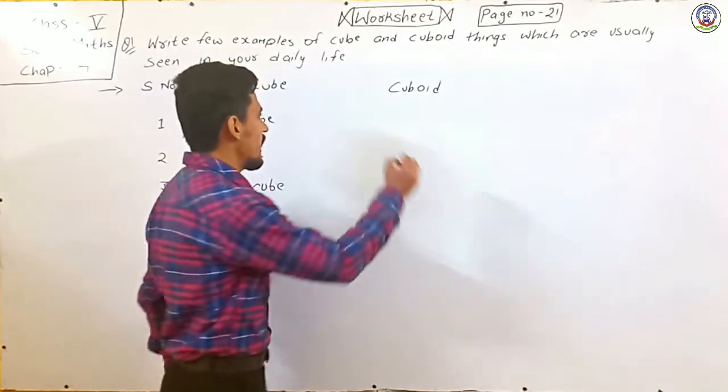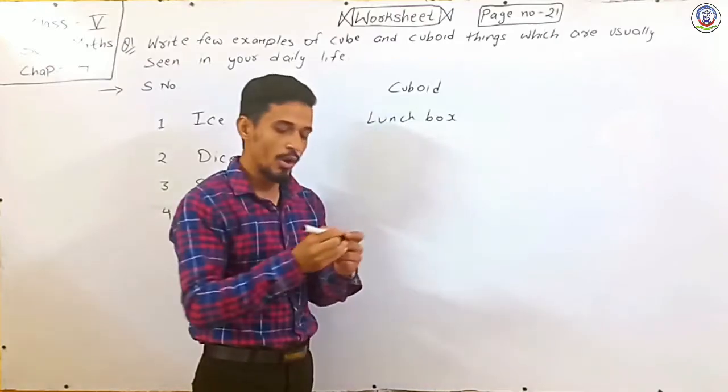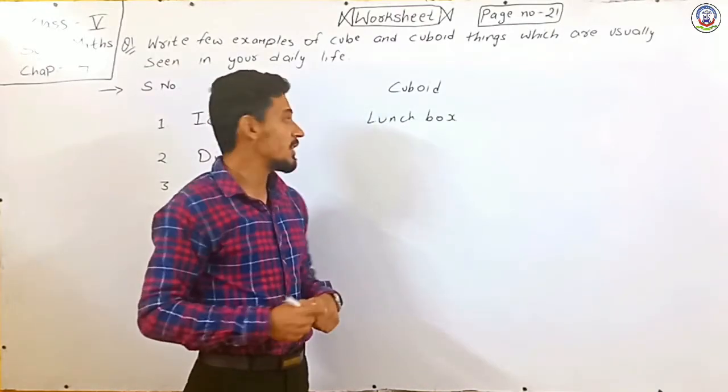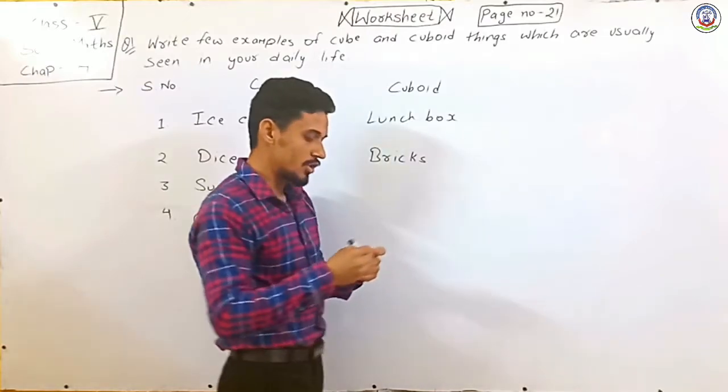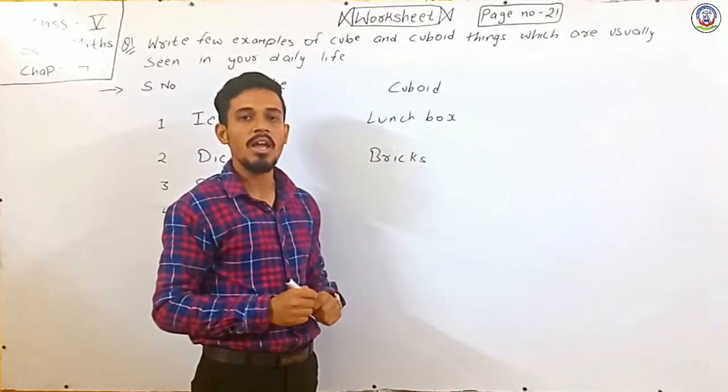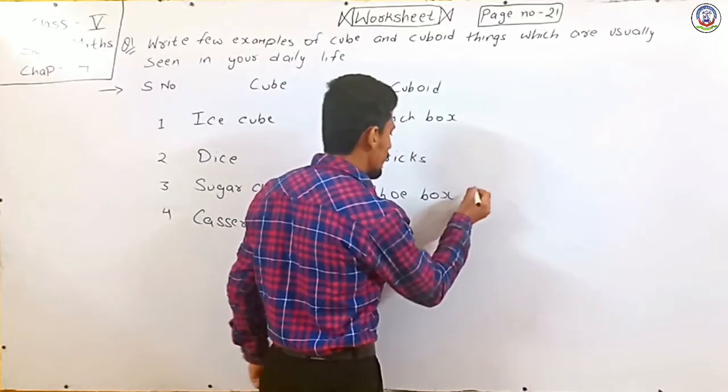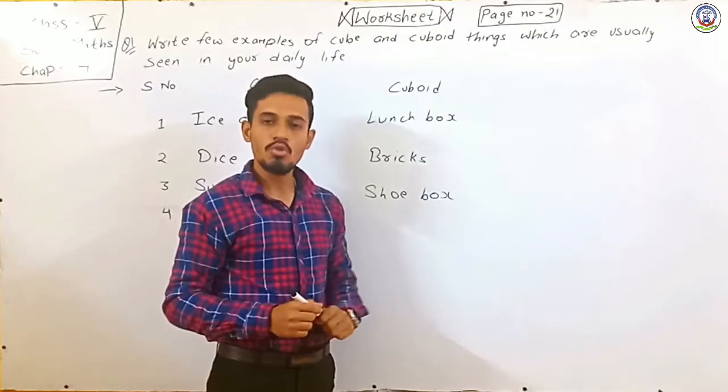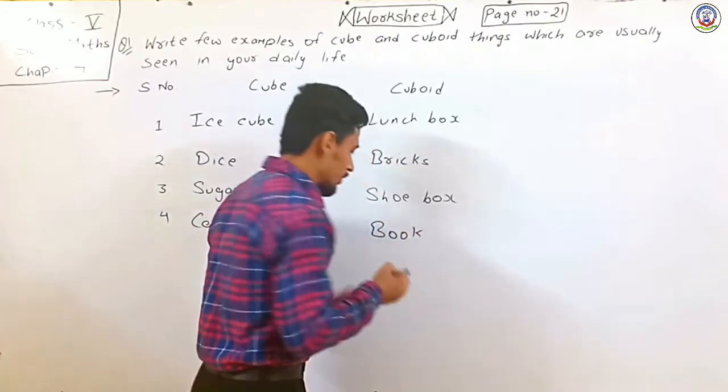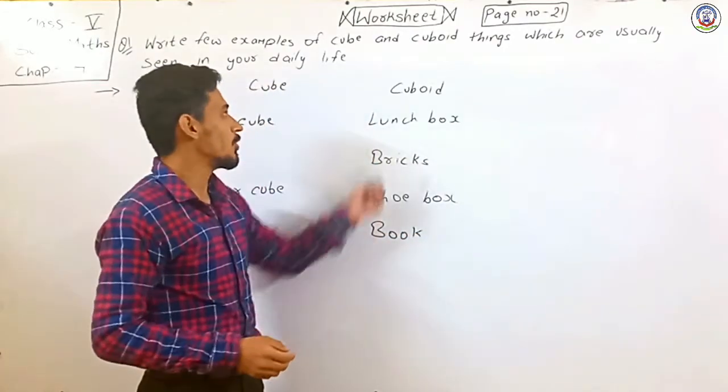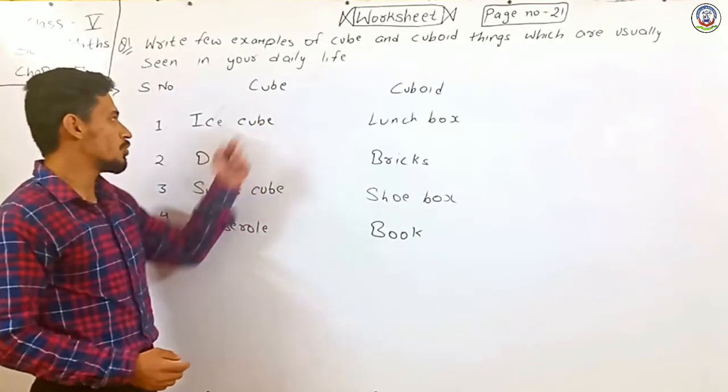Now, the second one is bricks, which we use to build. The shape is cuboid. The third one is shoebox, which we get when we buy shoes. The fourth one is the book, which we use.